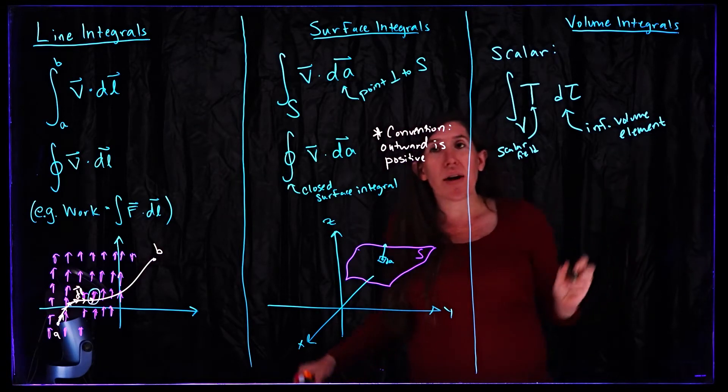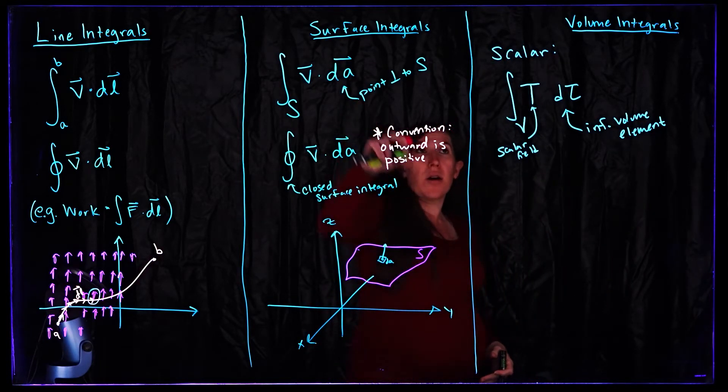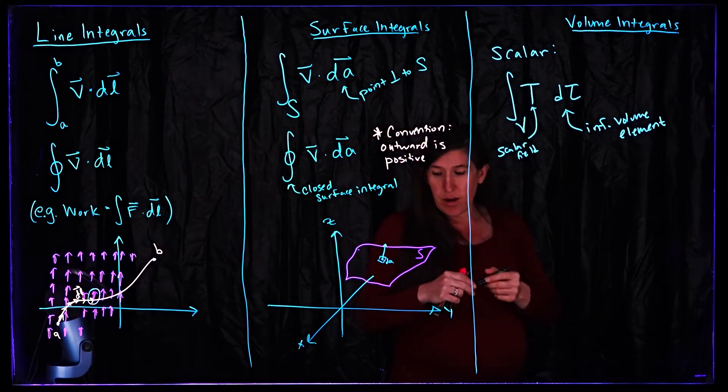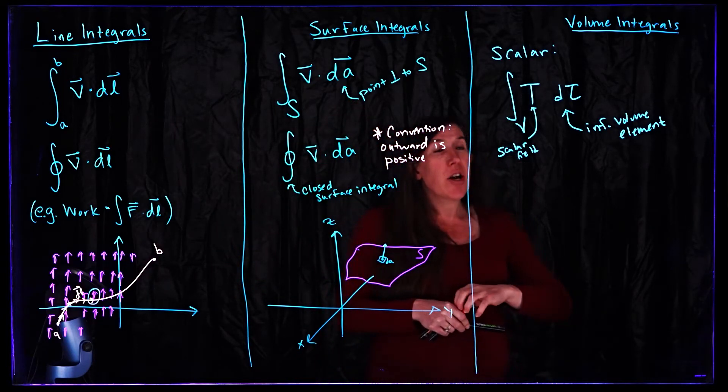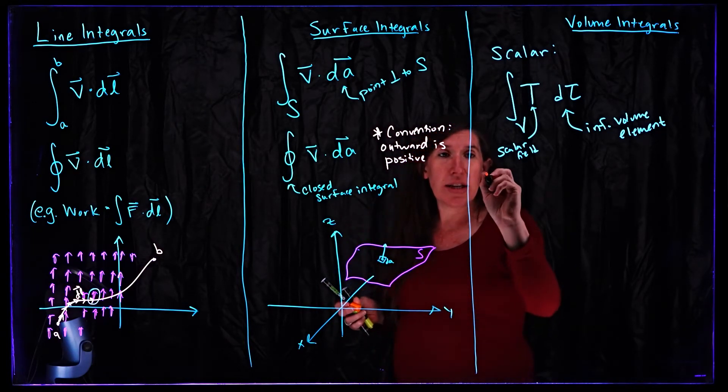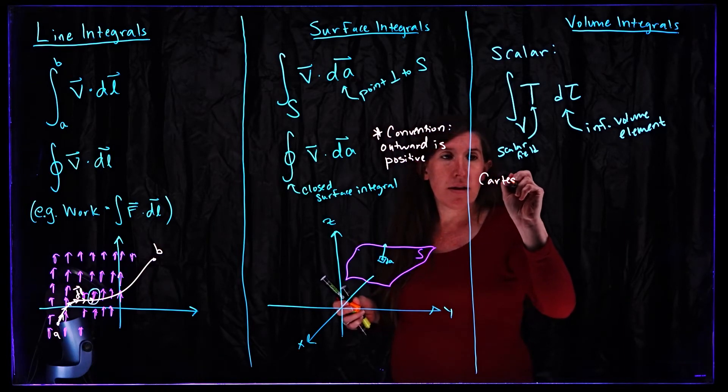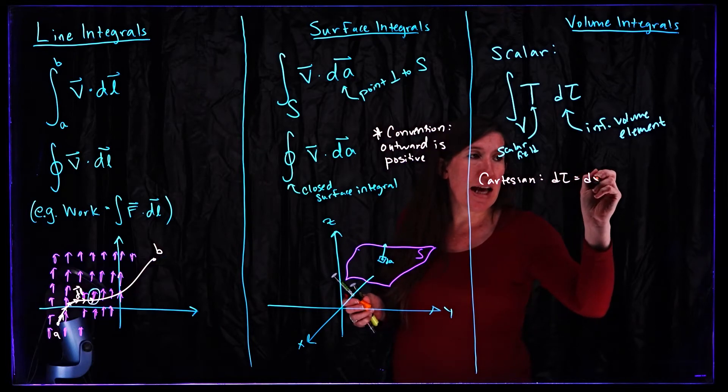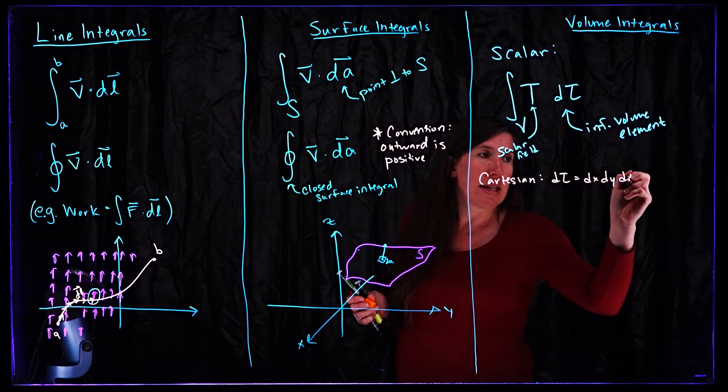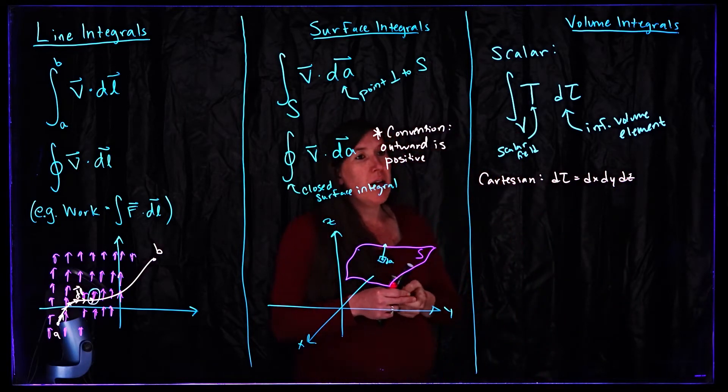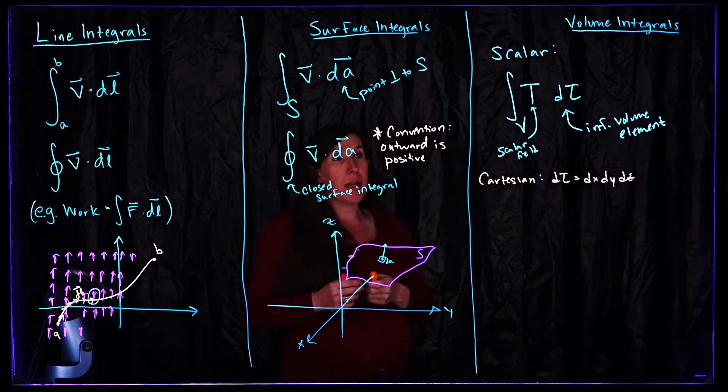And then d tau here is some infinitesimal volume element. So we're integrating over a whole volume, no longer a line or an area. And now we're integrating over a volume. In Cartesian coordinates this volume element is very nice. So in Cartesian, d tau is simply dx dy dz. It'll be much more complicated when we consider different coordinate systems and we'll have to be a lot more careful.